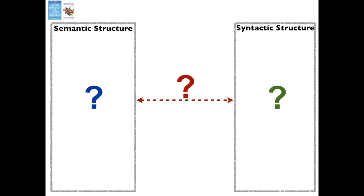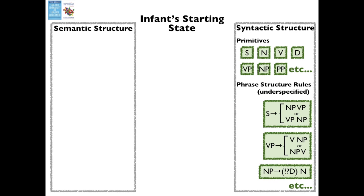Pinker argued that if some parts of the puzzle were already known, the infant could bootstrap her way into the rest. So he posited that at the outset of acquisition, the infant already has an inventory of syntactic categories as well as underspecified phrase structure rules that are going to need some specifications. She knows maybe that sentences can be composed of a noun phrase followed by a verb phrase or a verb phrase followed by a noun phrase — she just doesn't know the order yet.